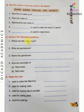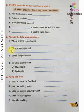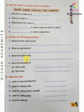Answer the following questions. Where are rocks found? Rocks are mostly found below the soil. What are gemstones? Gemstones are hard rocks and they are very expensive. Name two gemstones: emerald and sapphire.